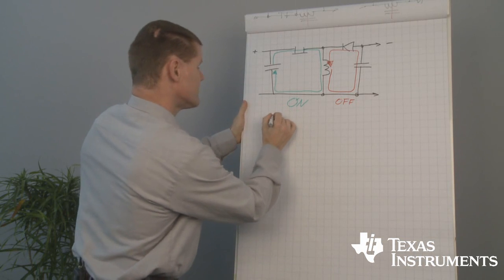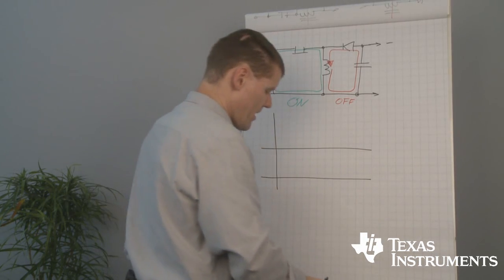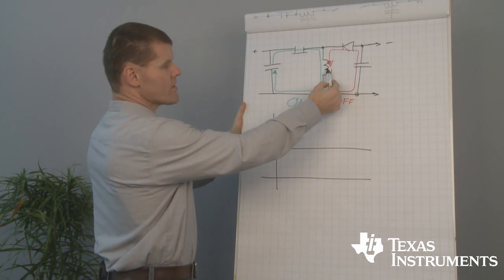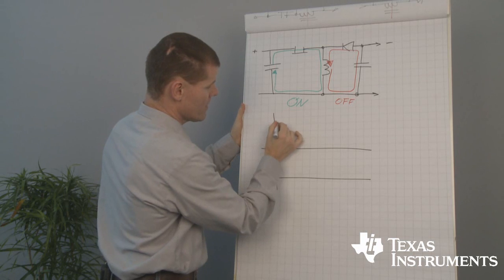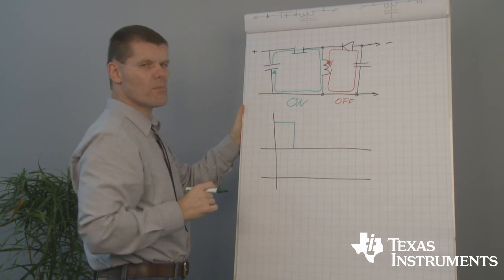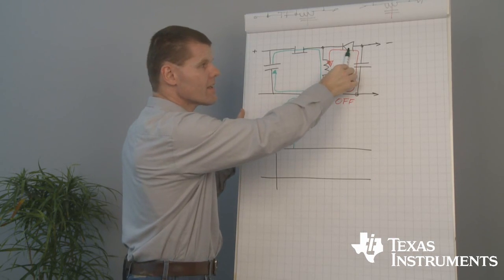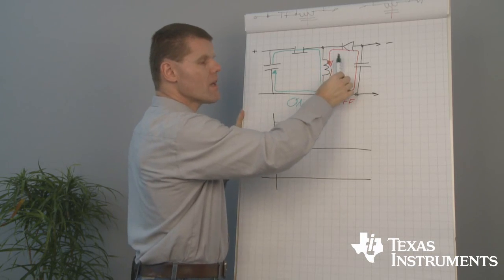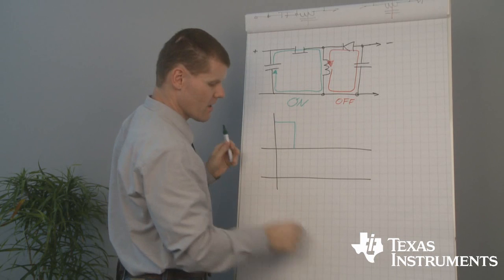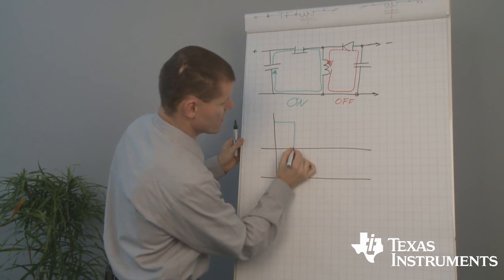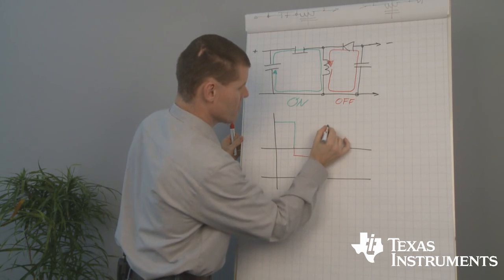Let's have a look at the voltages and currents. At the on-state, we are forcing current through the inductor, and the voltage at the switch node will be the input voltage. In the off-state, when the rectifier is conducting at our switch node, there will be the so-called flyback voltage. The negative output voltage minus the forward voltage of the diode will be seen at our switch node. When the switch closes again, the input voltage will be at our switch node.